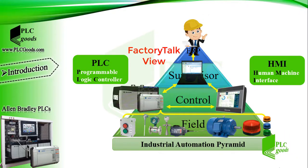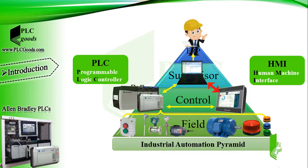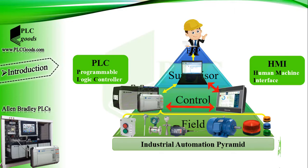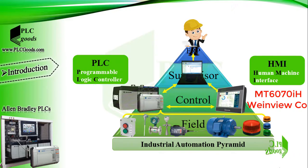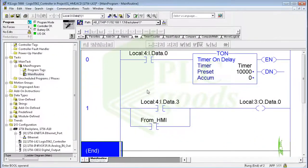In this video, first I'll use Factory Talk View software to design a simple HMI screen on the computer. Then I'll program my HMI device using a USB cable and connect it to my PLC via a serial connection. My HMI model can be programmed by EasyBuilder 8000 software. Let's start by learning Factory Talk View software.